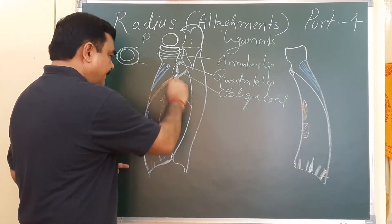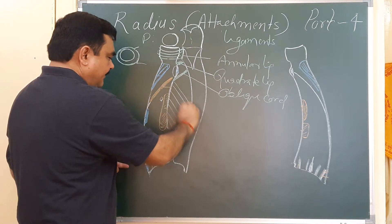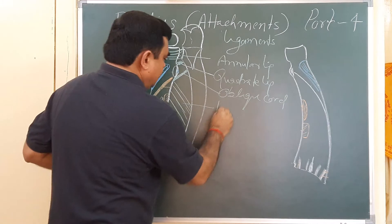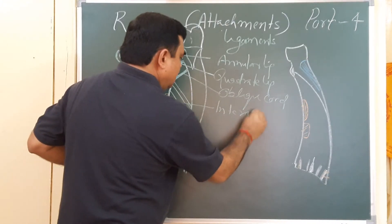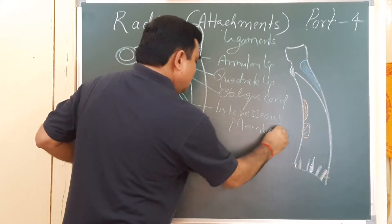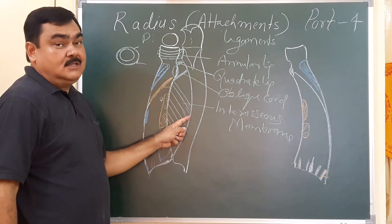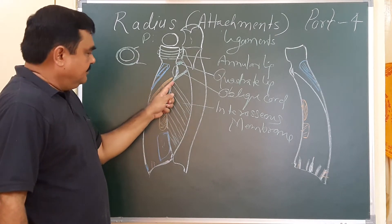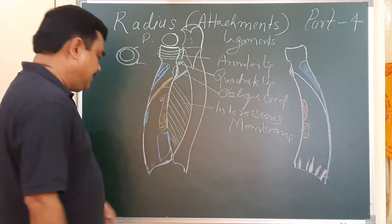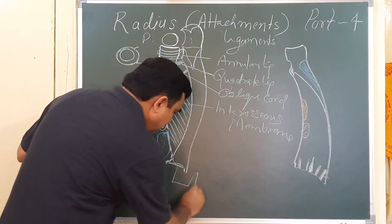Here is the position of the interosseous membrane. This is the interosseous membrane. It connects the interosseous border of the radius with the Ulna. This is the interosseous border through which the interosseous membrane is attached. And here, the articular disc is present — this is the fibrocartilaginous articular disc.